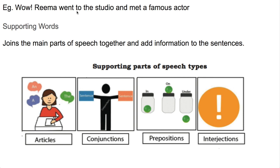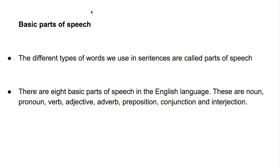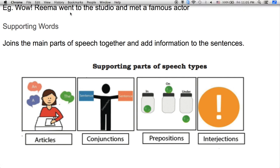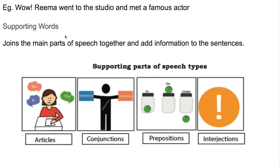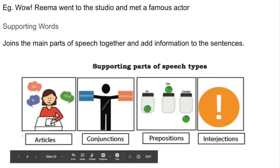Words like to, the, and a are called supporting words. Supporting words join the main parts of speech together and add information to sentences. The types of supporting words are: articles, conjunctions, prepositions, and interjections.